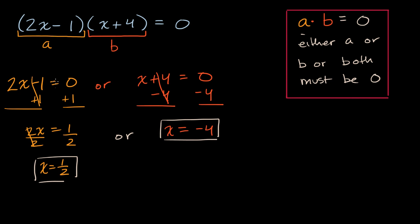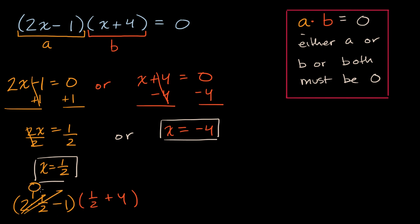It's pretty interesting to substitute either one of these in. If x is equal to one half, the first expression becomes two times one half minus one, which equals one minus one, which is zero. Zero times anything is going to be equal to zero, so when x equals one half, the first expression becomes zero, making the product equal zero. Likewise, if x equals negative four, the second expression is clearly going to be zero, and even though the first expression isn't zero in that case, anything times zero is going to be zero.